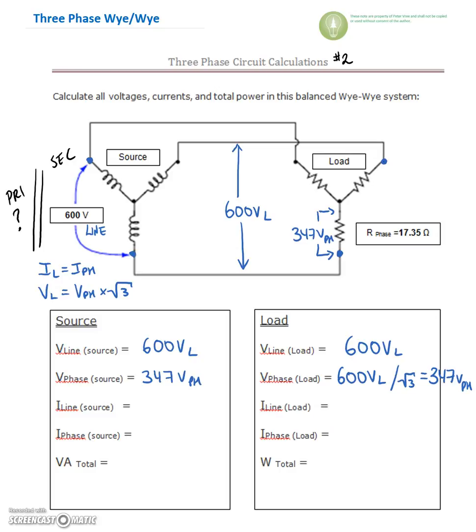Next step is we're going to find our phase current. So the next thing we need to do is take a three-phase circuit and break it down into a single-phase equation. So here we've got 347 volts. We're putting that across 17.35 ohms.